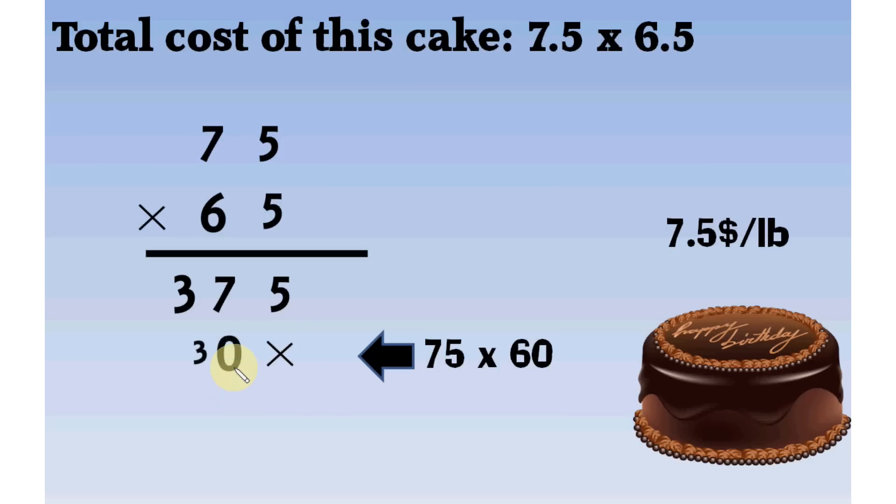6 times 5 is 30. 0 stays here, 3 carried forward to the next position. 6 times 7 is 42. We add the carry. 42 plus 3 equals 45.